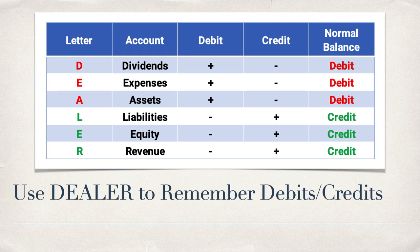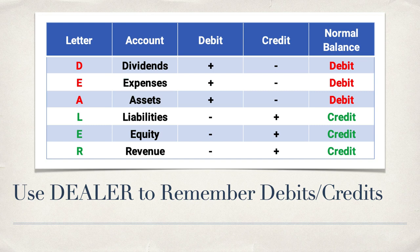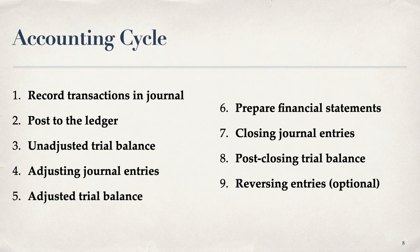Here's how to remember it: use the acronym DEALER — D-E-A-L-E-R. The first three accounts — DEA — Dividends, Expenses, and Assets — all take debits to increase; credits decrease them, so the normal balance is debit. For example, cash is an asset with a debit normal balance. The last three — LER — are Liabilities, Equity, and Revenue; these all take credits to increase and debits decrease them, so their normal balance is credit. Memorize this system and you'll have all five basic accounts plus dividends covered.